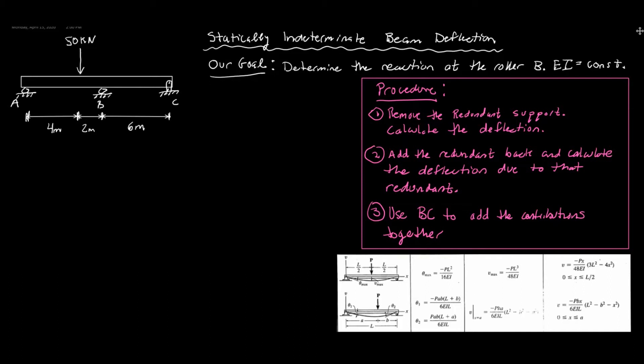In this video we're going to be doing an example of a statically indeterminate beam deflection problem. Our goal here is to determine the reaction at roller B. This is statically indeterminate because we have one more support than what we usually see in a determinate problem, so we don't have the number of equations we need to calculate this.